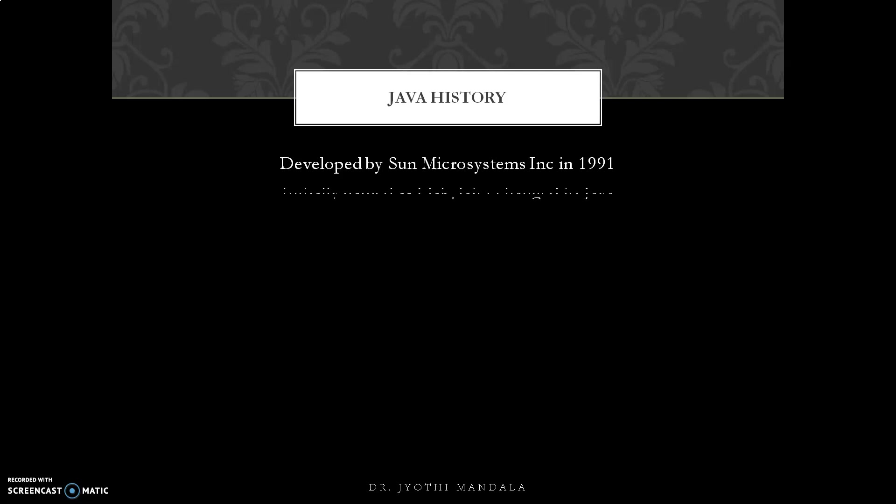Earlier the name of this programming language was not Java — it was called Oak. However, at that time the name Oak had already been taken by someone else, so they needed to change it. The reason they chose the name Java is that while developing the language, the team consumed a lot of coffee. That coffee was prepared from coffee beans that came from a famous island, and that coffee bean name is Java.